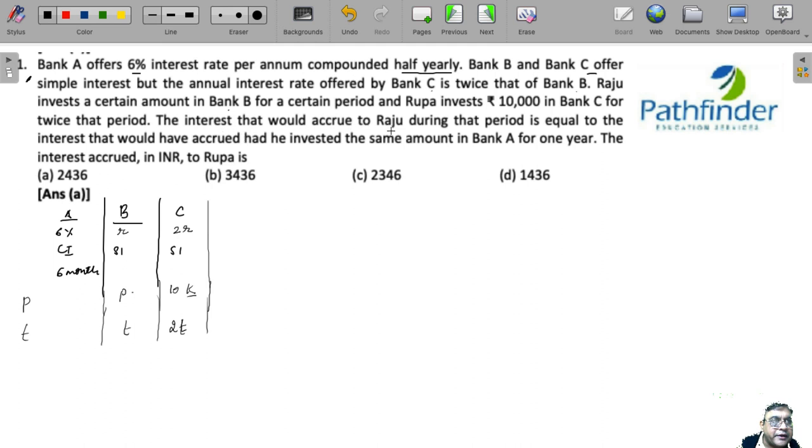The interest that would accrue to Raju during that period is equal to the interest that would have accrued had he invested the same amount in Bank A for one year.